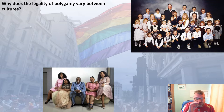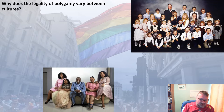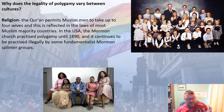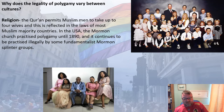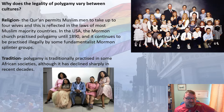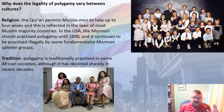Why does polygamy vary between cultures? The main reason is religion. In the Muslim holy book, the Quran, Muslim men are permitted to take up to four wives, and this is reflected in the laws of Muslim-majority countries. In the USA, the Mormon church practised polygamy until 1890, and it still continues illegally in some fundamentalist Mormon splinter groups. There is also tradition — polygamy is traditionally practised in some African societies, though it has declined sharply in recent decades.